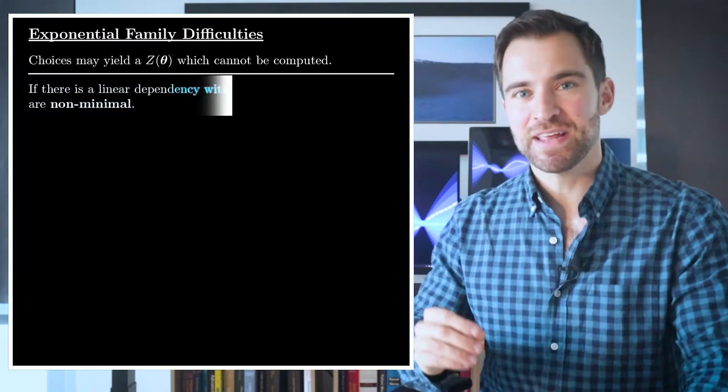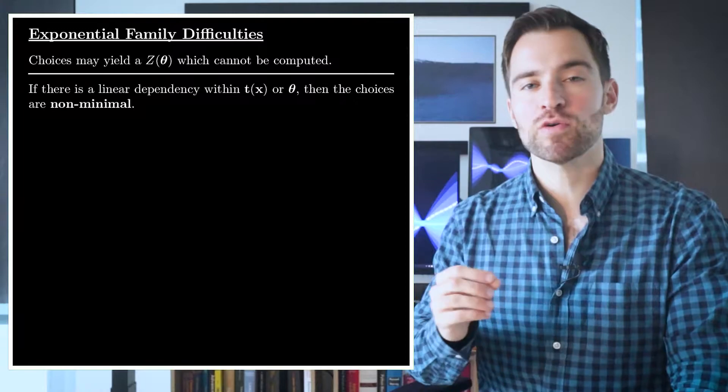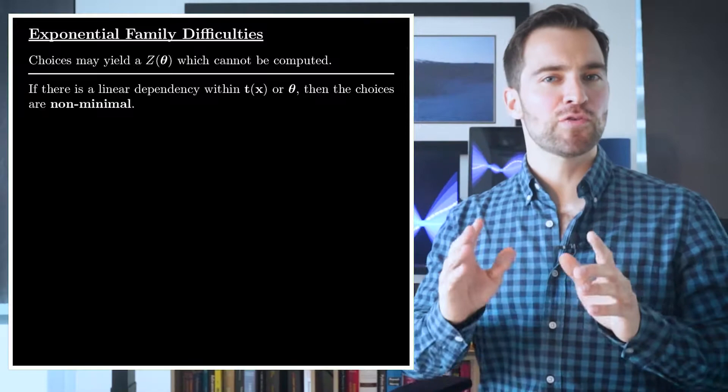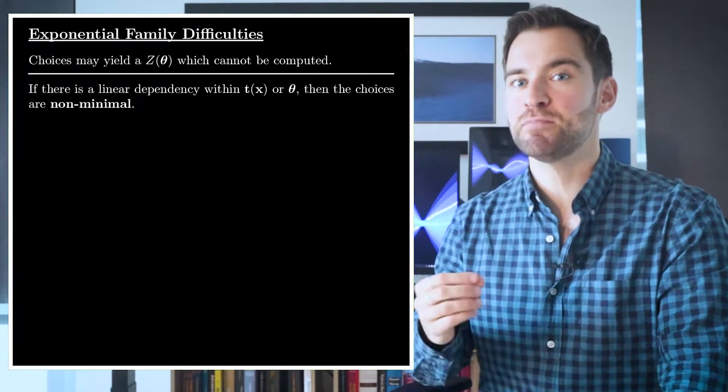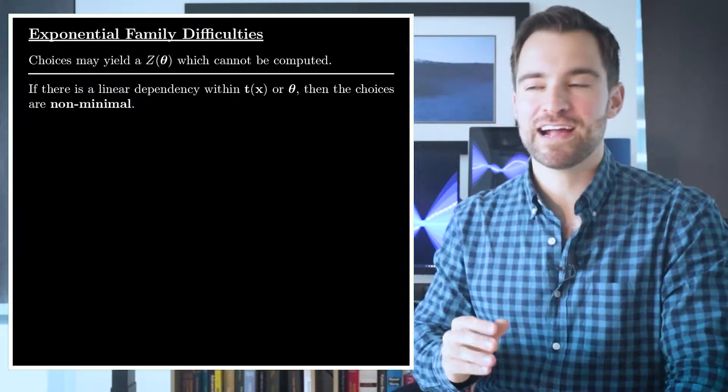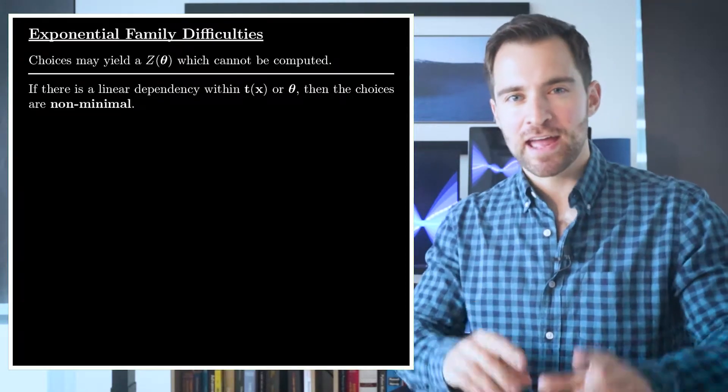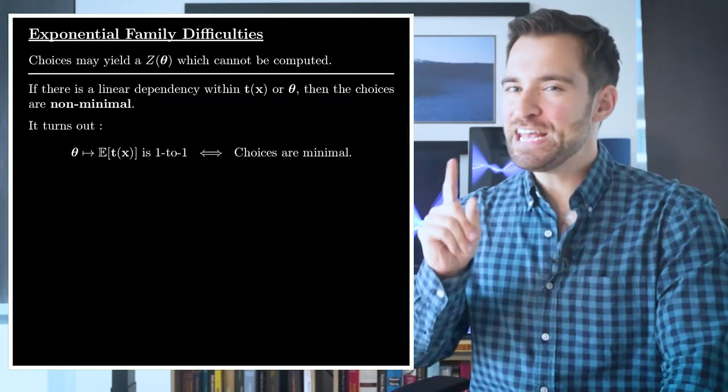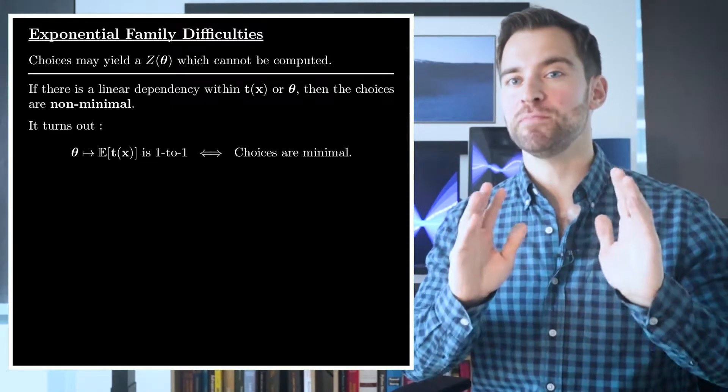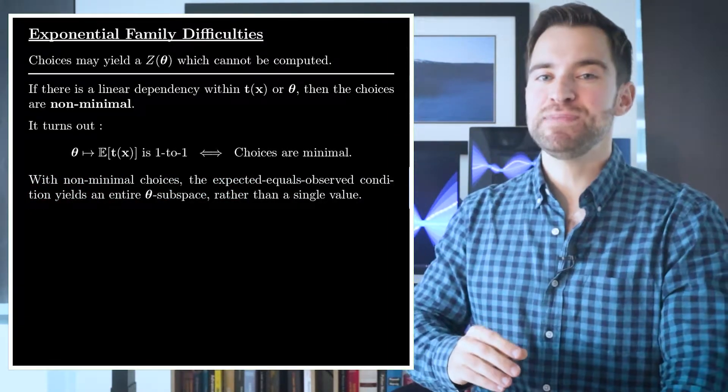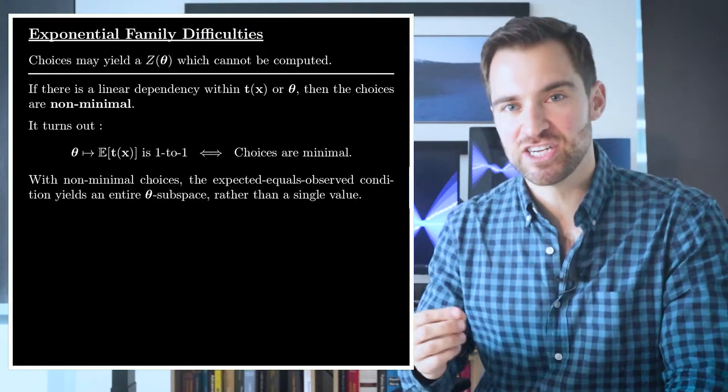Second, if your choices yield a linear dependency in θ or the sufficient statistics, then you'll be dealing with a non-minimal representation. For example, if one sufficient statistic is some multiple of another, then you'll have this problem. This creates a problem when paired with the fact that I'll just straight up state. There is a one-to-one mapping between the mean and canonical parameters, if and only if, your choices are minimal.